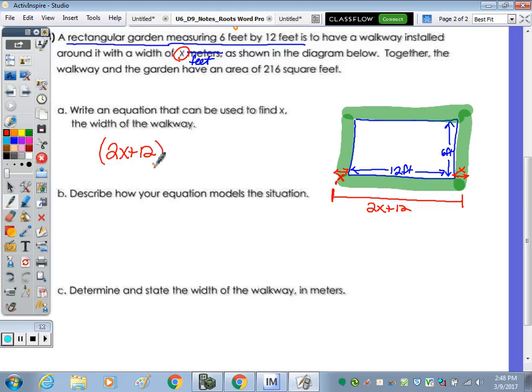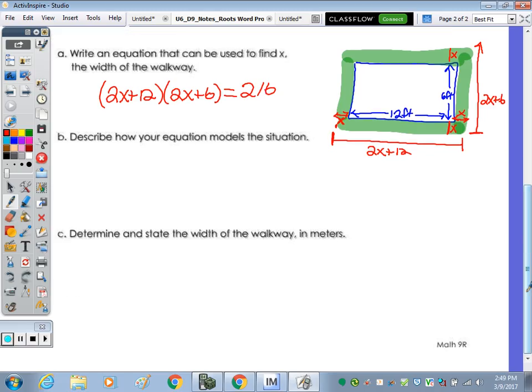And then the other dimension, we start here and walk all the way up. It's how many units for this piece? X. We walk 6, and then another X would be 2X plus 6. It said we have a total of the walkway and the garden, all together 216 square feet. We're going to work on B last, the description. Right now, we're going to do C, determine and state the width of the walkway in feet. The walkway was X, so we have to find X.